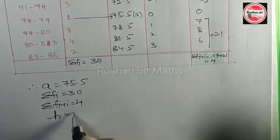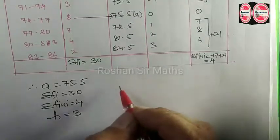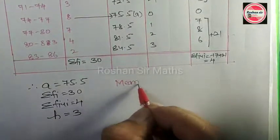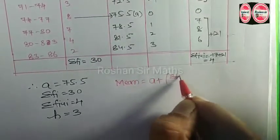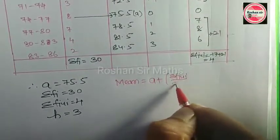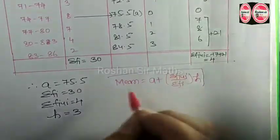We'll apply the mean formula. Mean is equal to A plus (Sigma FiUi divided by Sigma Fi) times H. This is our formula.